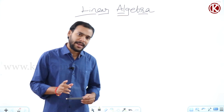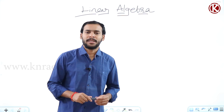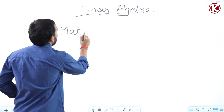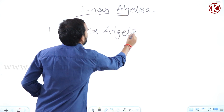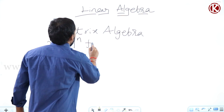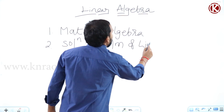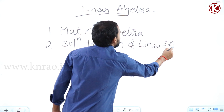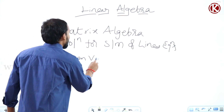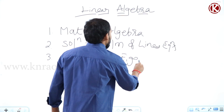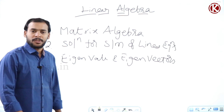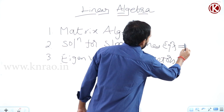The entire linear algebra can be divided into three main topics. The first one is matrix algebra, the second one is solution for system of linear equations, and the third one is eigenvalues and eigenvectors.